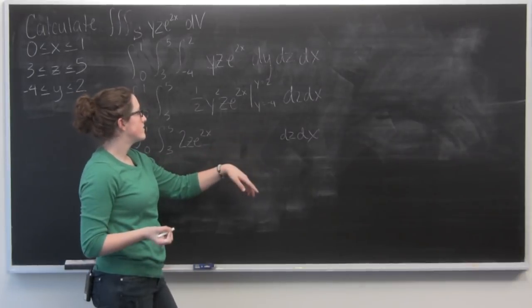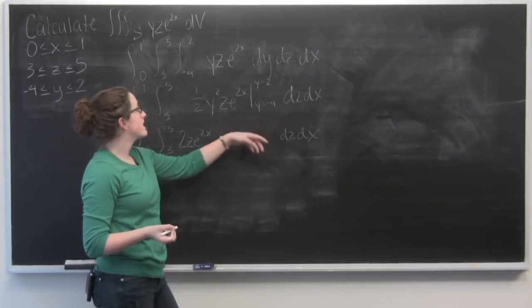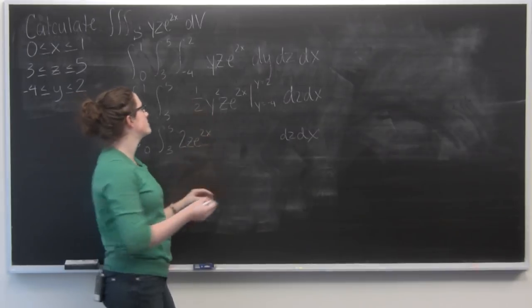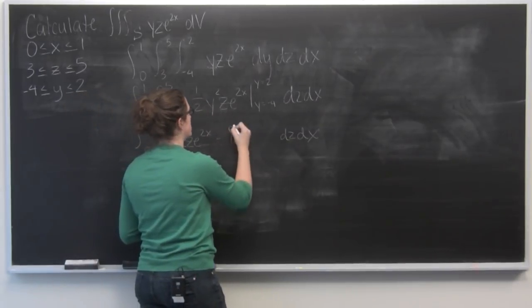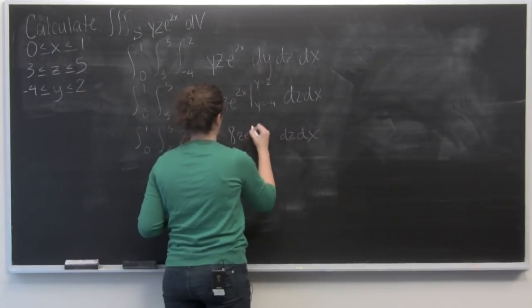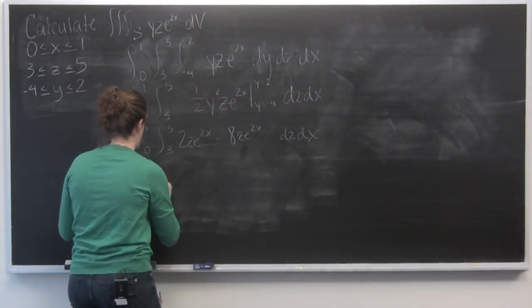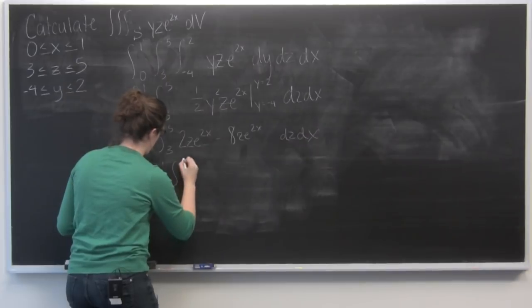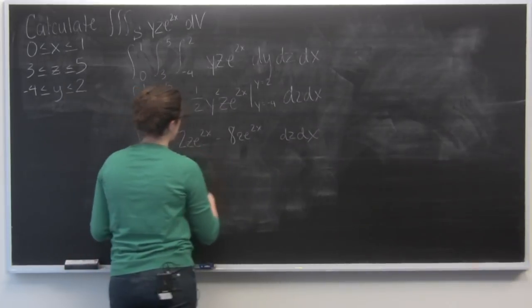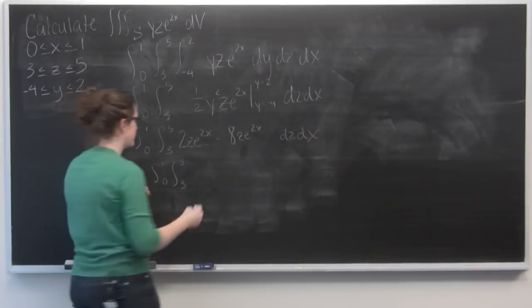Now I want to plug in a negative 4. Well, negative 4 squared is 16. Divided by 2, minus 8. And then I just want to combine these. So 2, minus 8, negative 6.